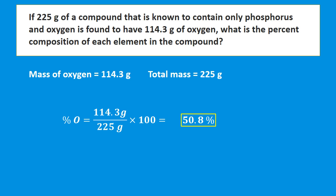We do not need to find the mass of phosphorus unless specifically asked. Since we know the percent composition of oxygen is 50.8% and phosphorus is the only other element, we simply subtract 50.8 from 100, giving us 49.2% phosphorus. So the percent composition is 50.8% oxygen and 49.2% phosphorus.